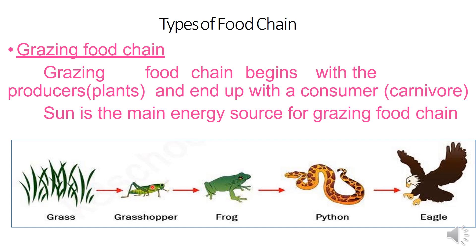Next, primary consumer: grasshopper gets food from grass; frog gets food from grasshopper; python gets food from frog; eagle gets food from python. So here, grasshopper is the primary consumer, frog is the secondary consumer, python is the tertiary consumer, and eagle is the quaternary consumer or top carnivore.